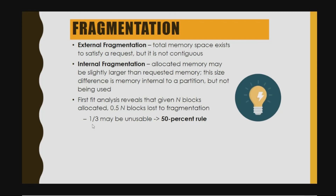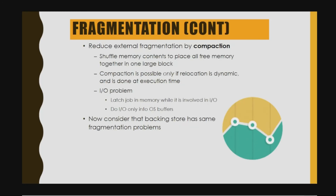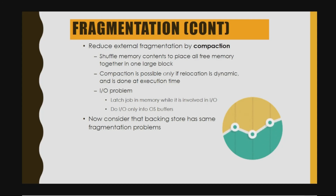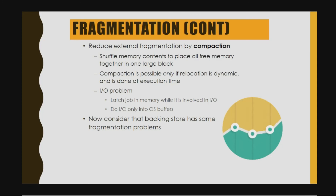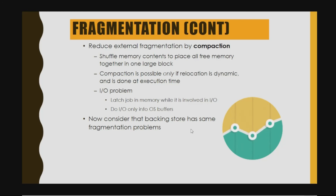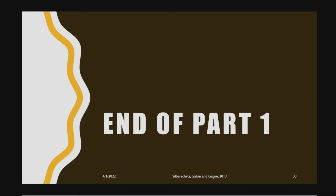First Fit analysis reveals that given n allocated blocks, 0.5n blocks are lost to fragmentation — one-third may be unusable, following the 50-percent rule. External fragmentation can be reduced by compaction: shuffling memory contents to place all free memory together in one large block. Compaction is possible only if relocation is dynamic and done at execution time. Input/output considerations apply, and the backing store has the same fragmentation problem.